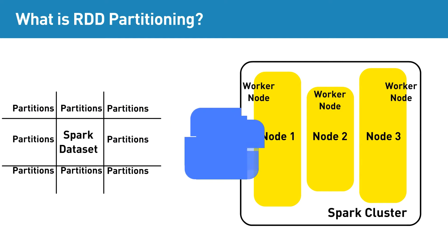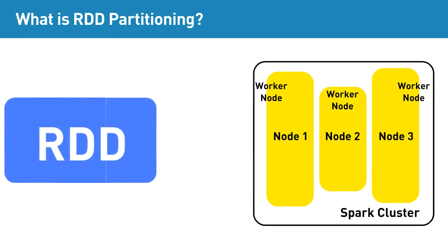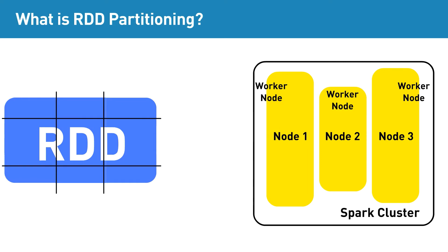If you can recollect, we saw in the video Apache Spark Architecture that the Spark cluster has worker nodes, whereas the Hadoop cluster has data nodes. Since the core abstraction of Spark is RDD, and since the data is split into partitions before storing into the Spark cluster, the process is called RDD partitioning.